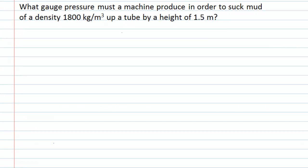In this hydrodynamics problem, we're asked what gauge pressure must a machine produce in order to suck mud of a density of 1,800 kilograms per meter cubed up a tube by a height of 1.5 meters. A few things of interest in that question: we're asked to find the gauge pressure, the mud has a density of 1,800 kg/m³ which will help with calculations, and the height is 1.5 meters.